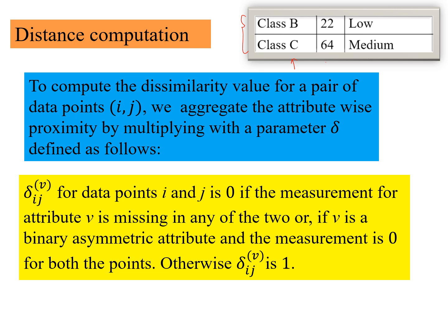So to compute the dissimilarity value for a pair of data points i,j, we aggregate the attribute-wise proximity. Attribute-wise, if it is nominal, then what is the distance between these two? Numeric. So this is what we mean by the attribute-wise proximity.